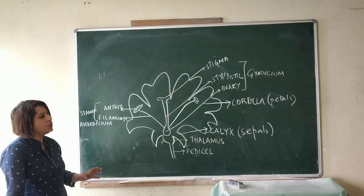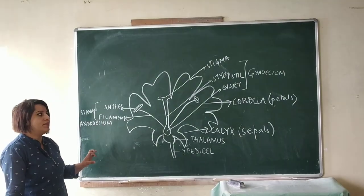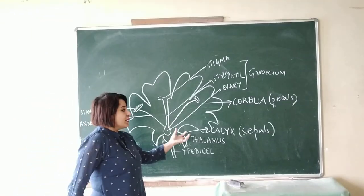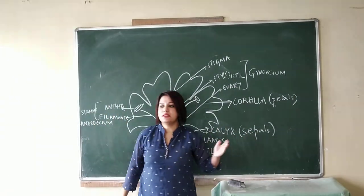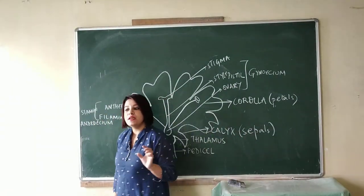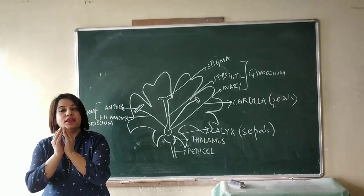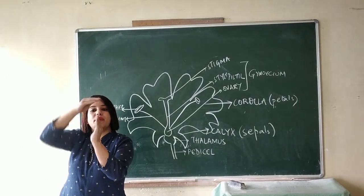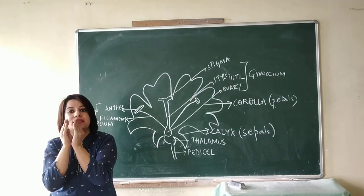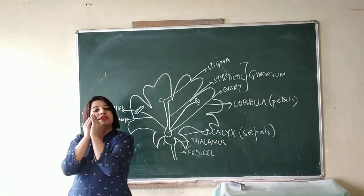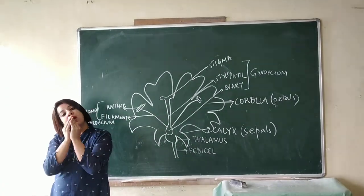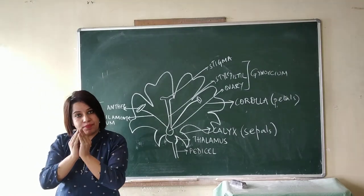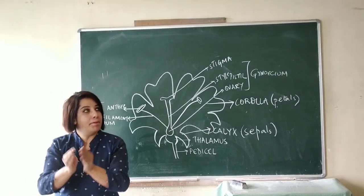So let's continue. Now I just did the parts last time. Today we'll be doing the functions. The calyx, or the sepals — if you have seen a bud, you'll find that the entire bud is covered by the sepals. That means the sepals protect the bud.